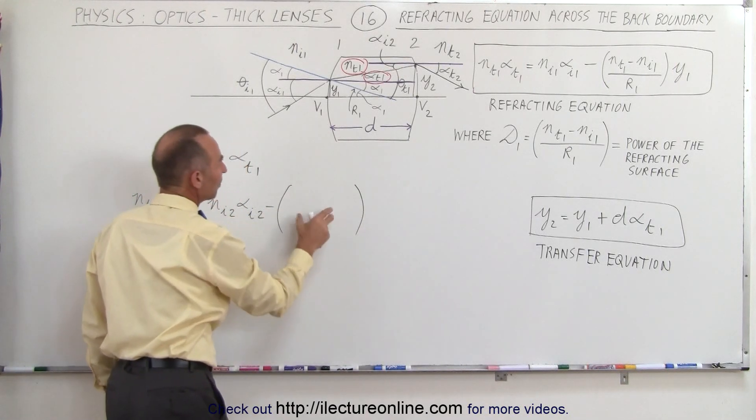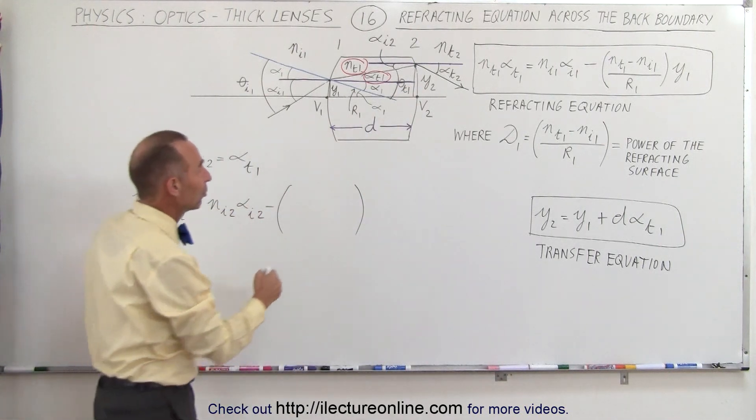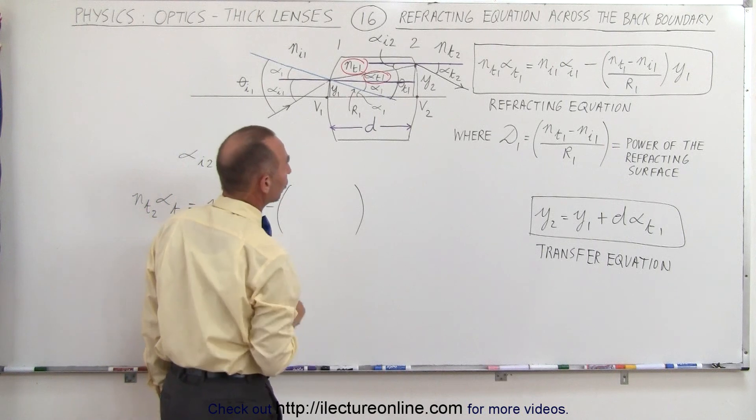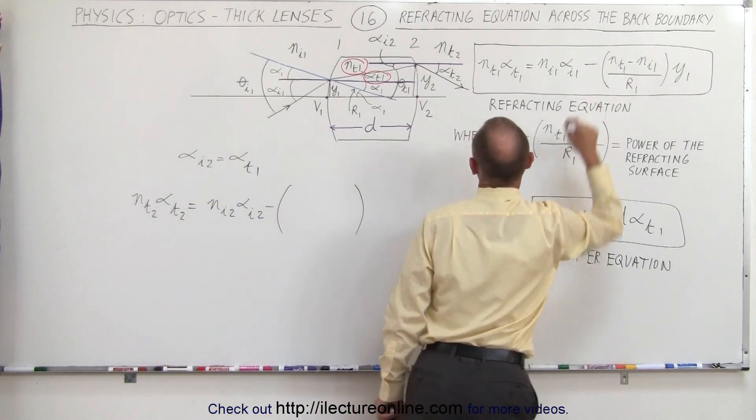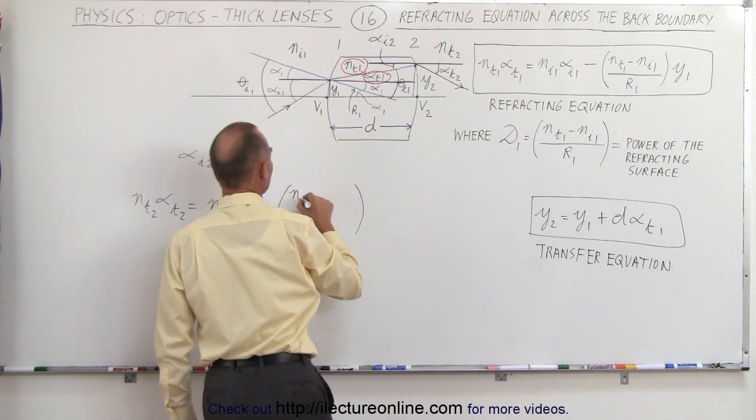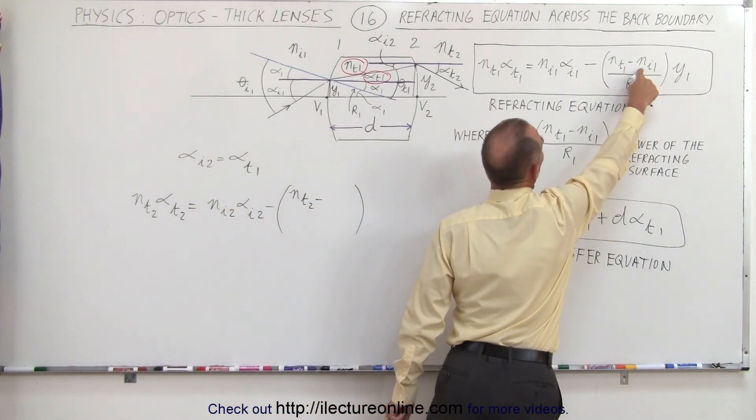Minus, and that would be the power of the refracting surface of the back side of the lens, minus what we would call D2, we'll define in just a moment. But it'll be the index of refraction on the other side, the transmitted side, so that would be NT2,